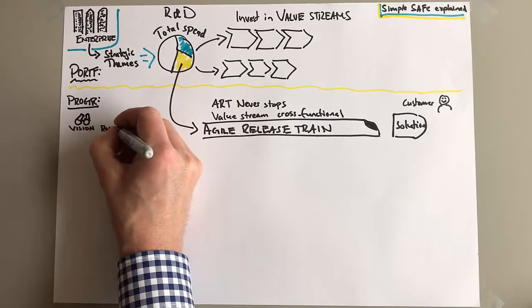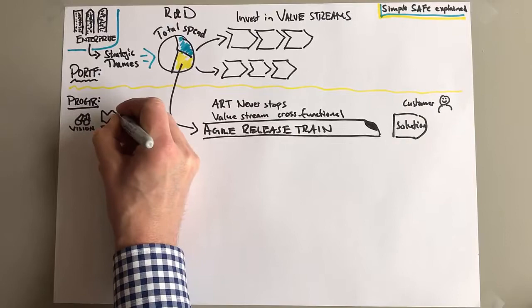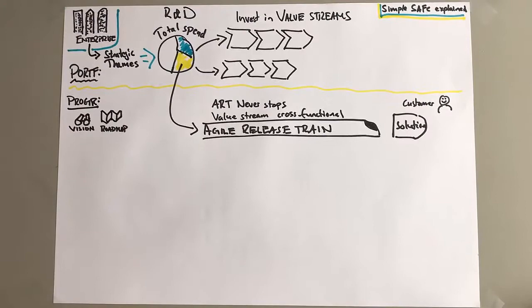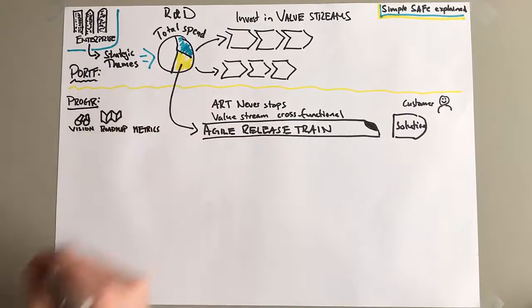And on the program level you also have of course a vision, really important for the context. And you have a roadmap, and the roadmap would be three to five quarters, something like that, out into the future. What do we think? What features are we going to deliver to our customers?